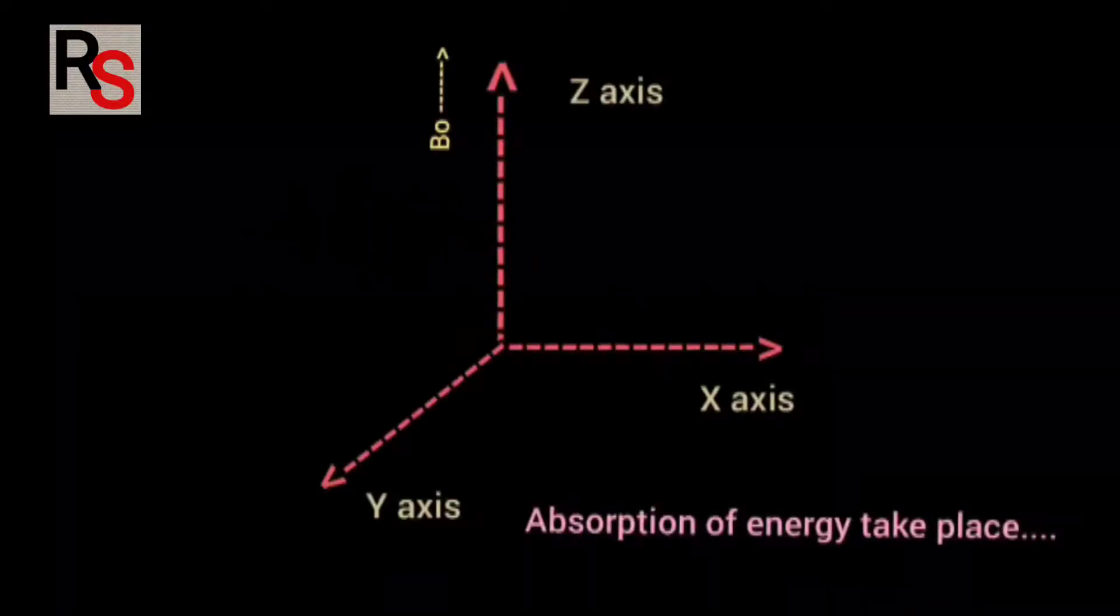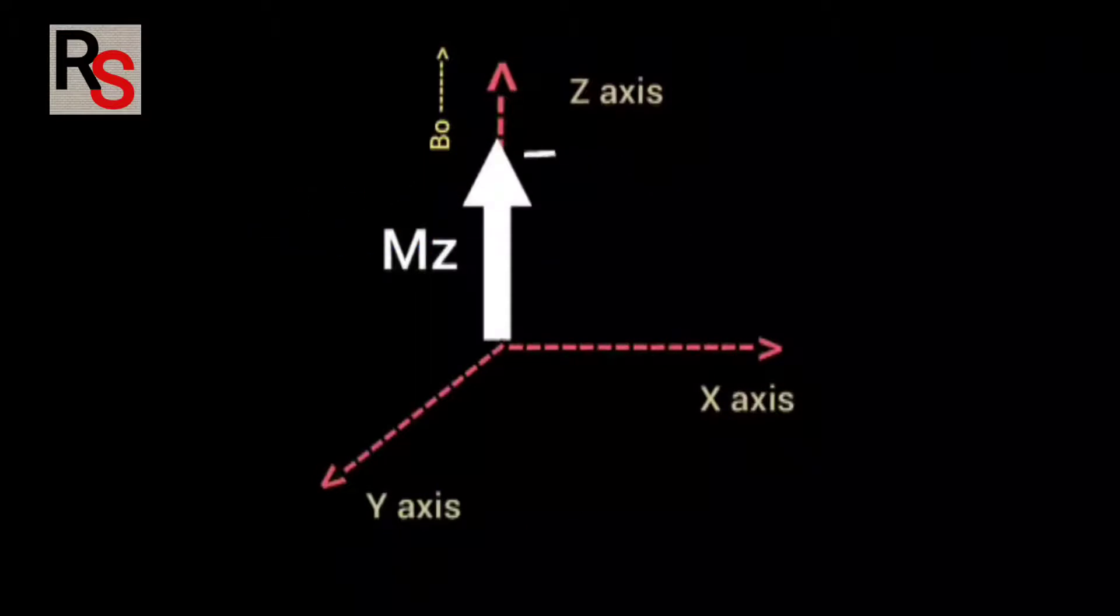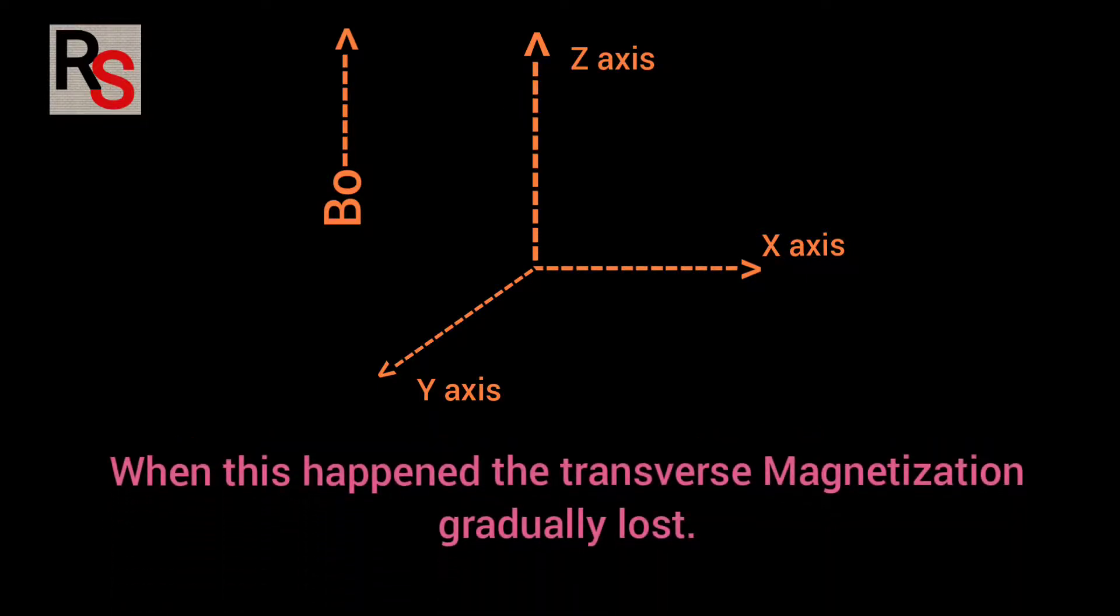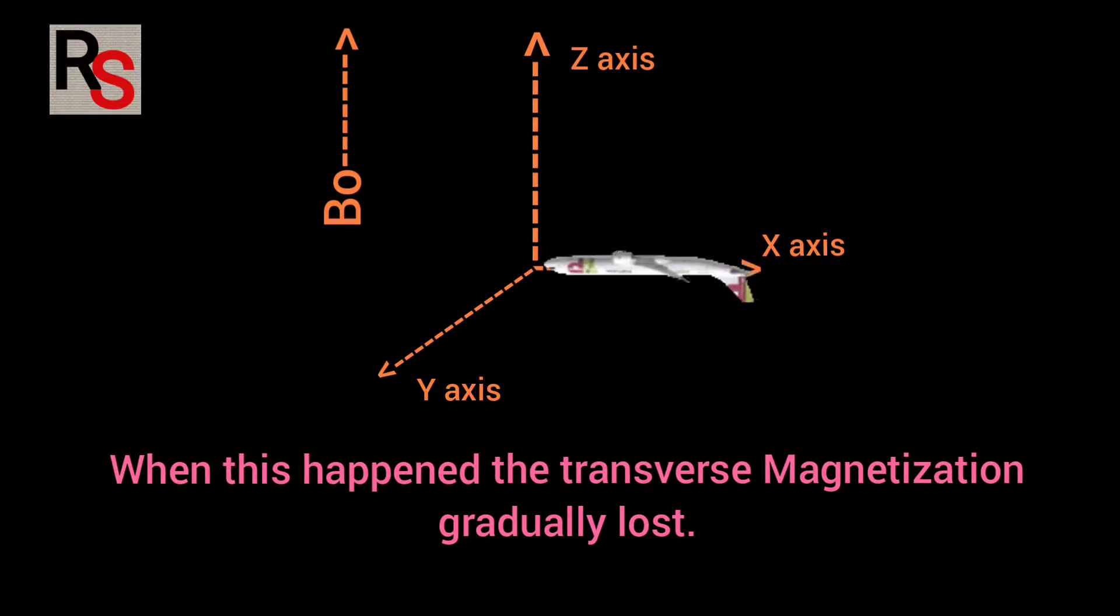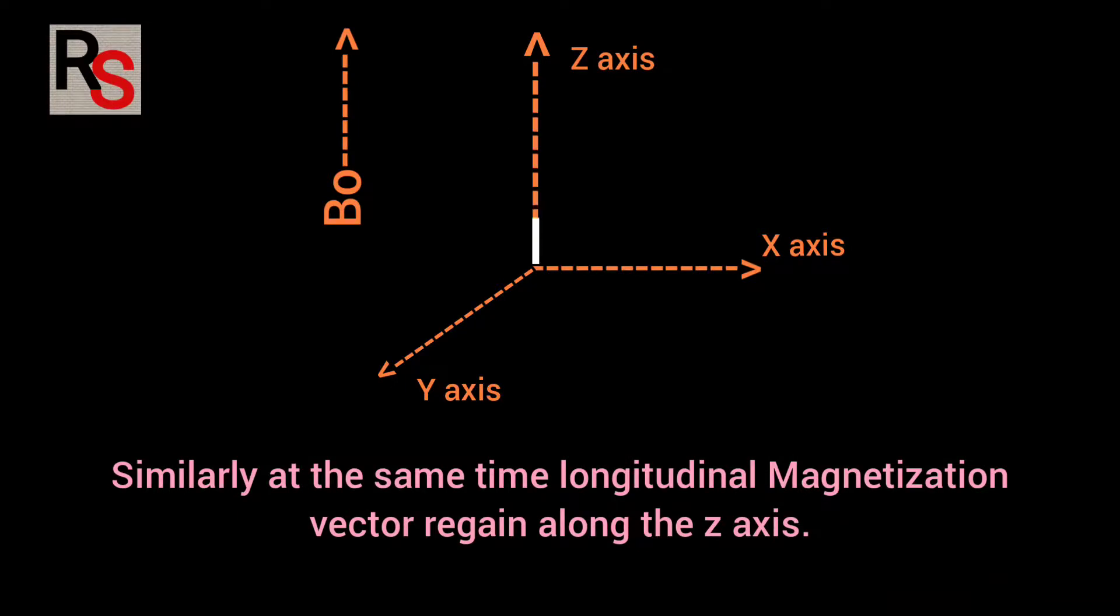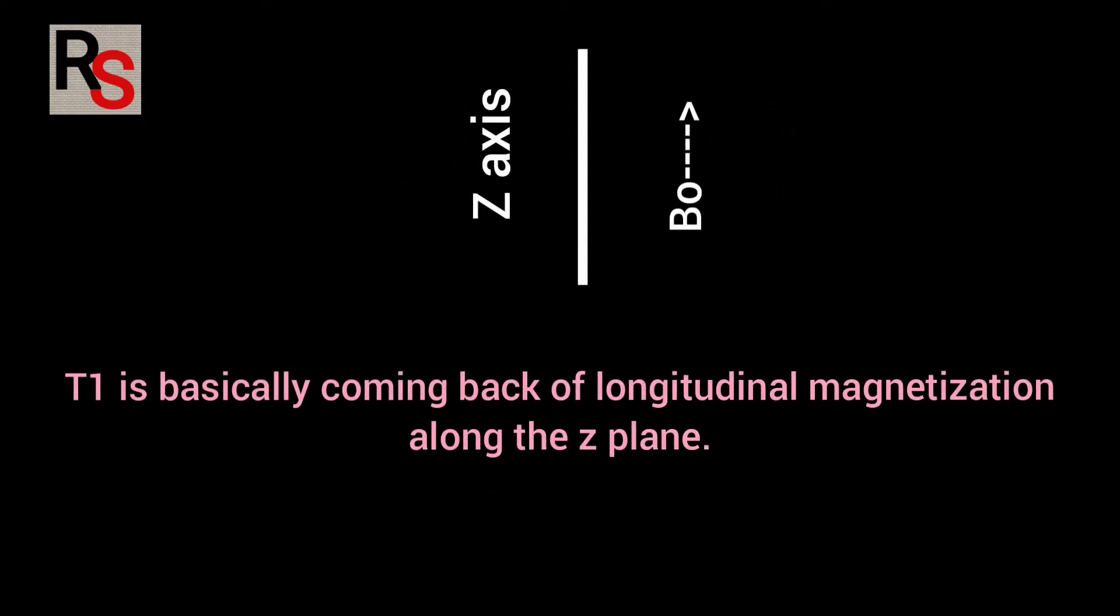As you know when RF pulse is applied longitudinal magnetic vector flips to transverse plane. But now when RF pulse is switched off what remains is only external magnetic field. Due to this strong magnetic field hydrogen protons will try to slowly come back to its previous position which is parallel to B0. When this happens look at the transverse magnetization which is gradually getting lost. Similarly at the same time longitudinal magnetization regained along the Z axis. So T1 is basically coming back of longitudinal magnetization vector to the Z plane.